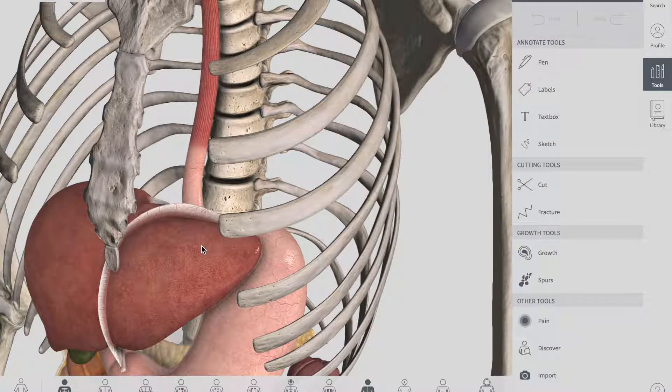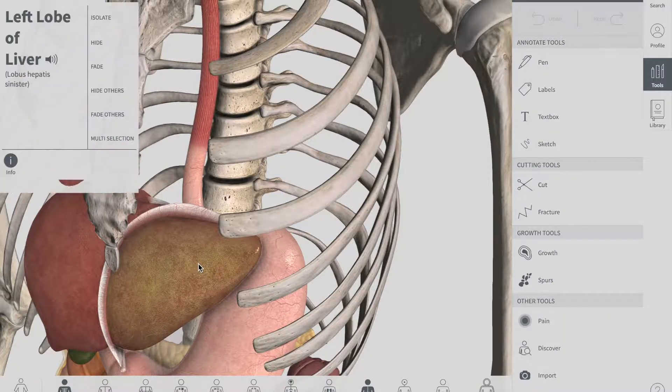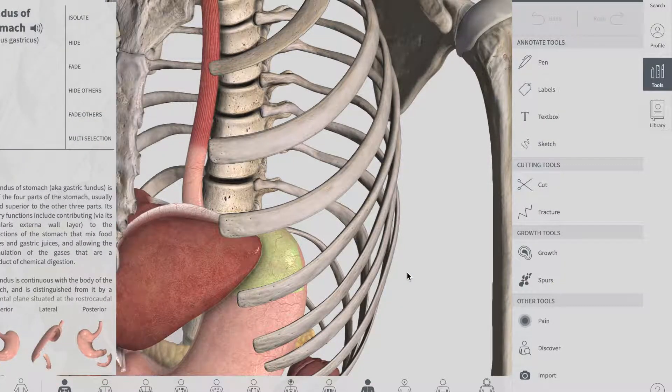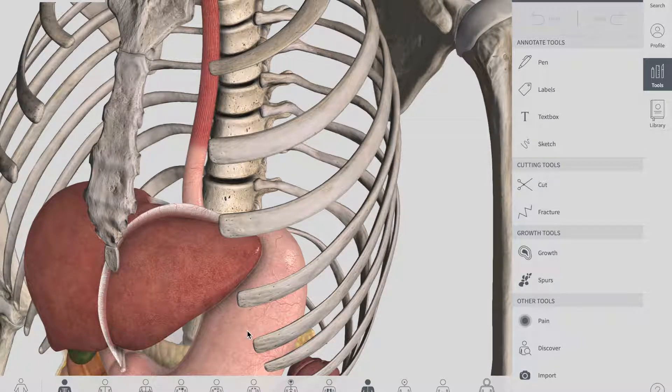The second one is that the walls of the intra-abdominal section of the esophagus are compressed when there is positive intra-abdominal pressure. The third one is the folds of the mucosa present aid in occluding the lumen at the gastroesophageal junction.